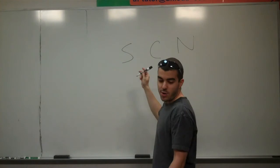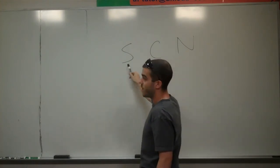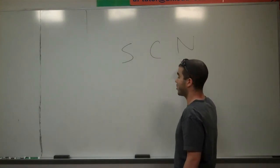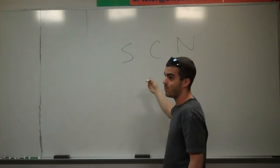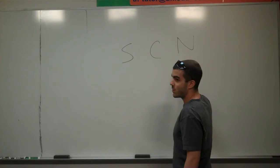If you remember your electronegativity trends, N is much smaller than S. So N is going to be the more electronegative element, which means any of the charges that are apparent on this molecule, in this case a one minus, they're all going to be localized on this particular system.